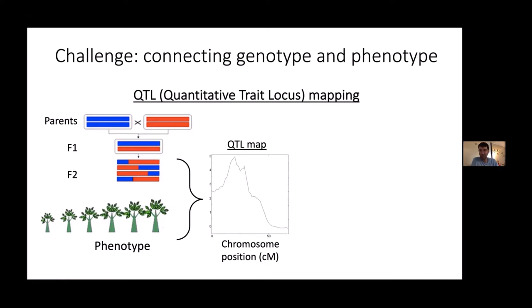QTL mapping is potentially very powerful because it can link genotype and phenotype. But in practice there's a big limitation: these QTL peaks are quite large, tending to contain anywhere from dozens to hundreds of genes. Ways to narrow this down are generally quite hard and take many years of effort, so people rarely undertake that. Most QTL studies just end up mapping the QTLs and leave it at that, which provides little biological insight about the actual biology of the trait.